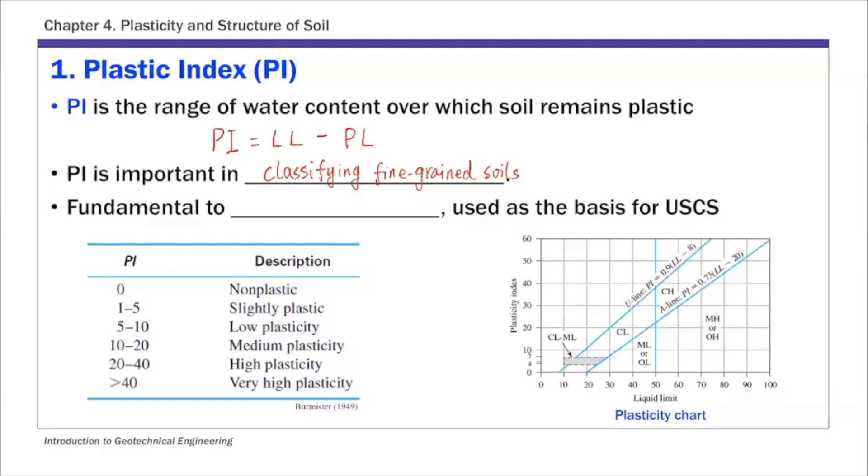PI is fundamental to the plasticity chart, which is used as the basis for classifying fine-grained soil in the USCS system—Unified Soil Classification System. We're going to go over this in more detail next week.